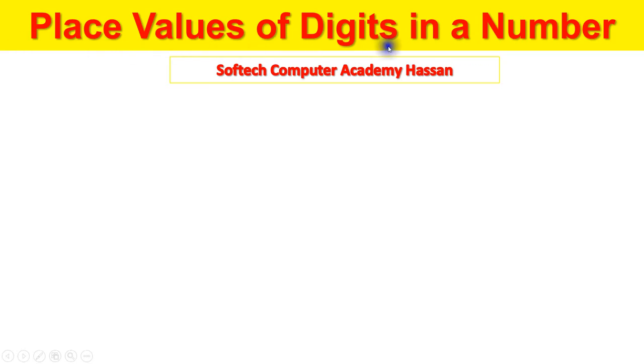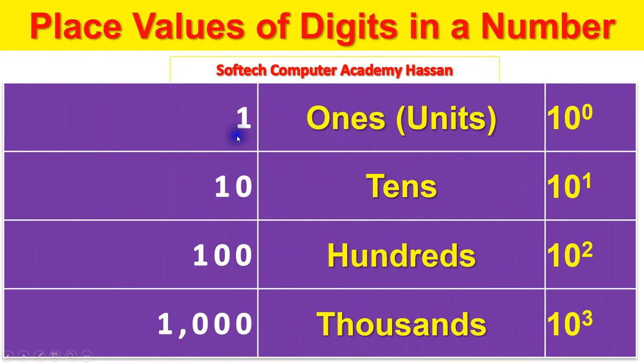Place values of digits in a number. Ones are units, that is 10 to the power of 0.